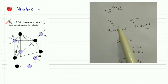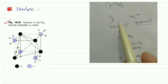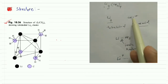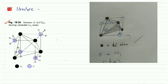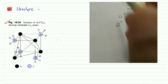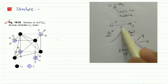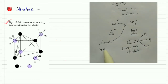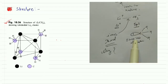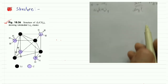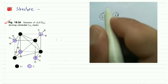So the basic structure is: Li₄ forms a tetrahedron, and on each plane (face) of the tetrahedron, a CH₃ group forms a pyramid. Now, why is the Li–C bond ionic? The main reason is the electronegativity difference between lithium and carbon. The electronegativity of carbon is higher than that of lithium.